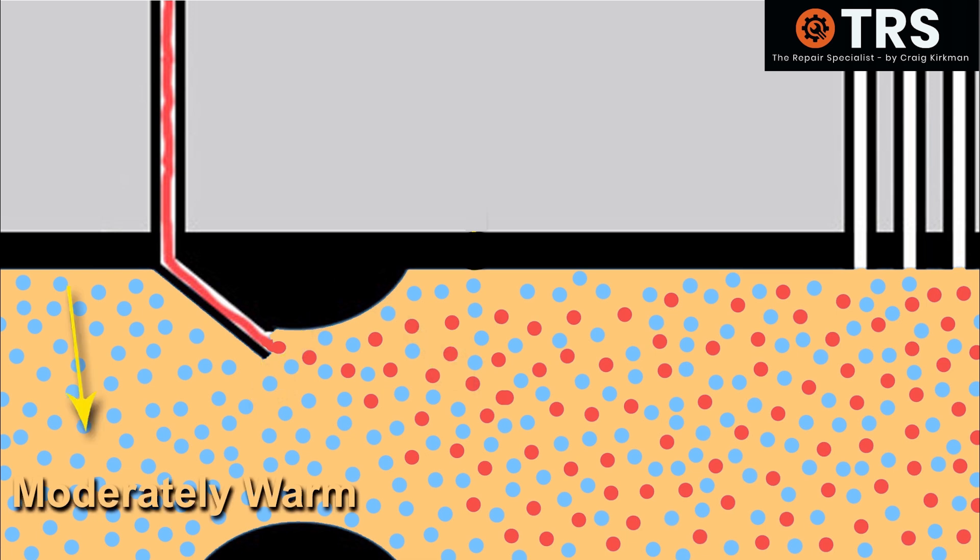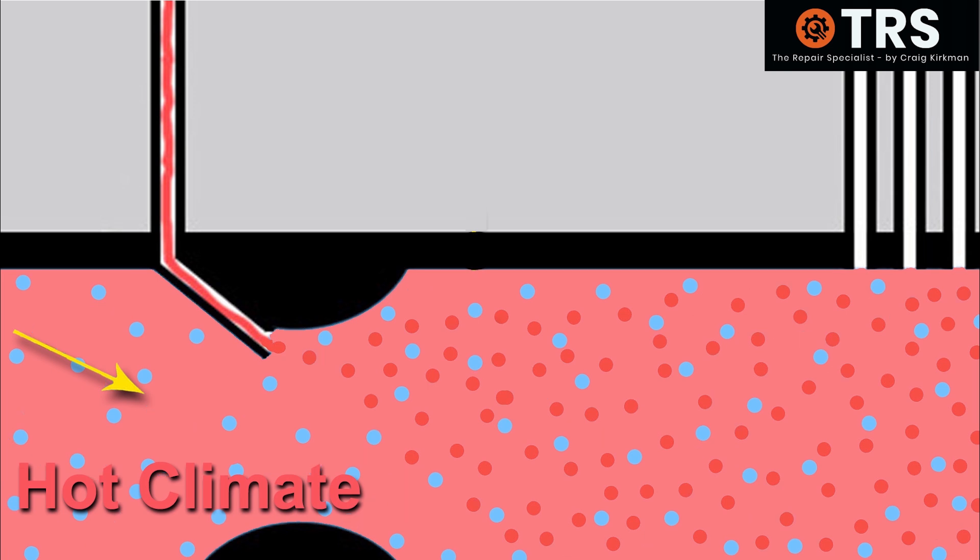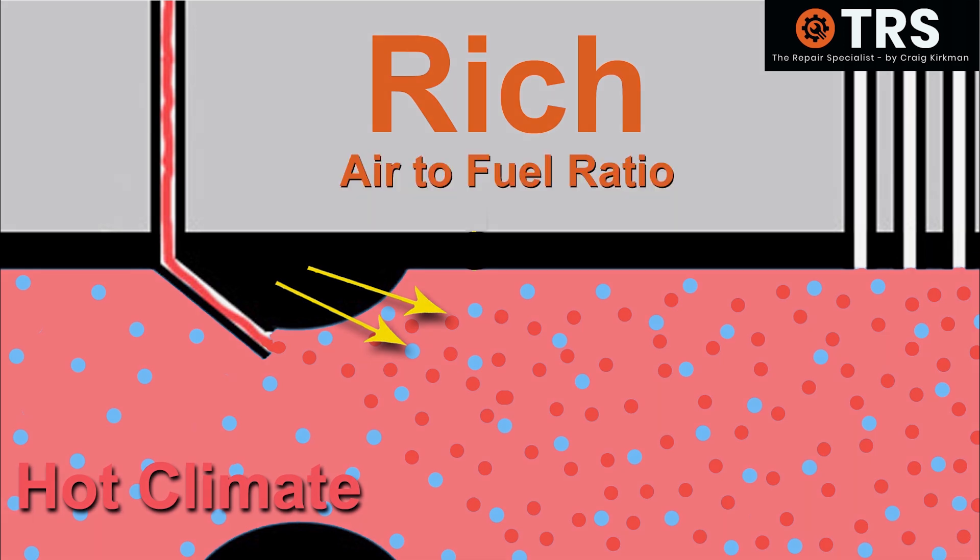And then we take this same carburetor and we go and run it in a hot climate where the air coming into the carburetor is much hotter and less dense. What we would find is that the air-to-fuel ratio is now different. We've actually got less air molecules in there compared to the set amount of fuel coming out of the main jet. That means we've now got an air-to-fuel ratio that's rich with fuel because there's more fuel-to-air ratio.